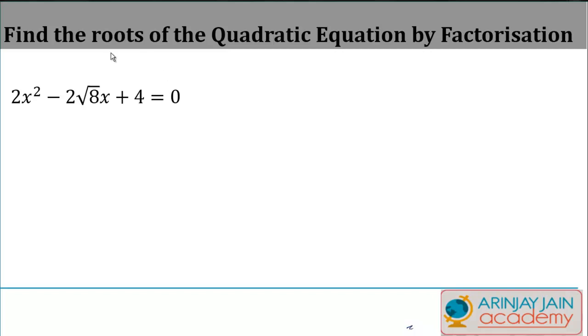Now we learned how to find the roots of a quadratic equation by factorization in the previous video. Here I'm going to tell you one more example so that when you do your practice it is easier for you. You have to find the root of a quadratic equation by factorization. The quadratic equation is 2x² - 2√8x + 4 = 0.